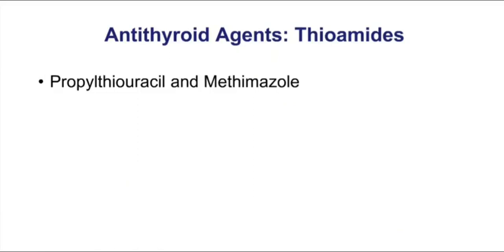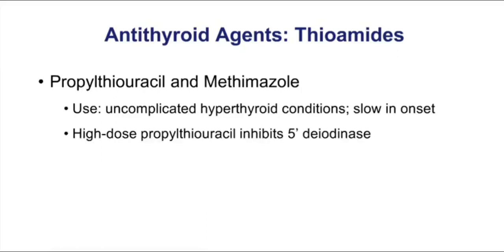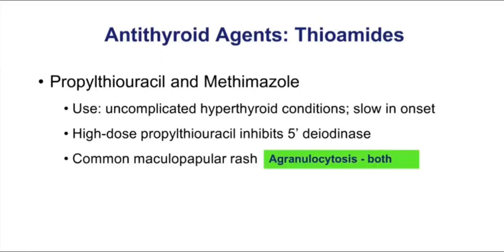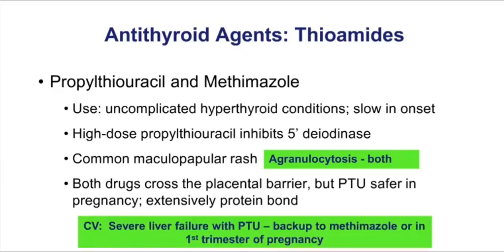Propylthiouracil and methimazole can be used as alternatives to iodine-131 in uncomplicated hyperthyroidism. Propylthiouracil differs from methimazole in that it's the one that can inhibit 5'-diiodinase, because both drugs affect earlier steps in thyroid hormone synthesis. You have to watch out for agranulocytosis as a side effect for both drugs — a popular test question. Given a choice, today we're more likely to go with methimazole, because severe liver failure has been seen with PTU. However, we do consider PTU in the first trimester of pregnancy, as PTU is more highly protein-bound and therefore a little safer.